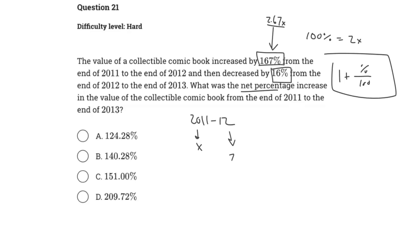So now here, know that our current value at the end of 2012 is 2.67x, but we want to find the net percentage, right? And we know from 2012 to 2013 it actually decreased by 16, so we can just use our formula over here: 1 minus 16 over 100. And this will give us a value of 0.84.